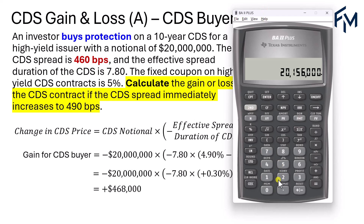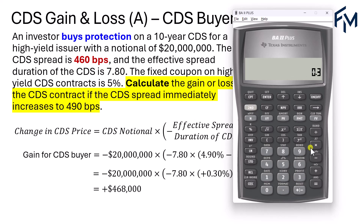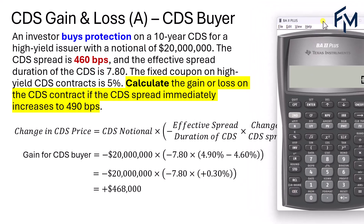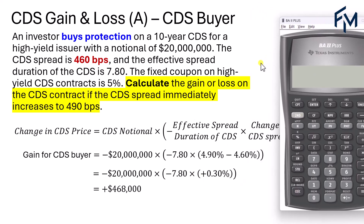As a quick check: $20,000,000 times 7.8 times 0.003 equals $468,000 — the gain for the CDS buyer. Note that this alternative formula can only be used if it is an immediate change in the CDS spread.